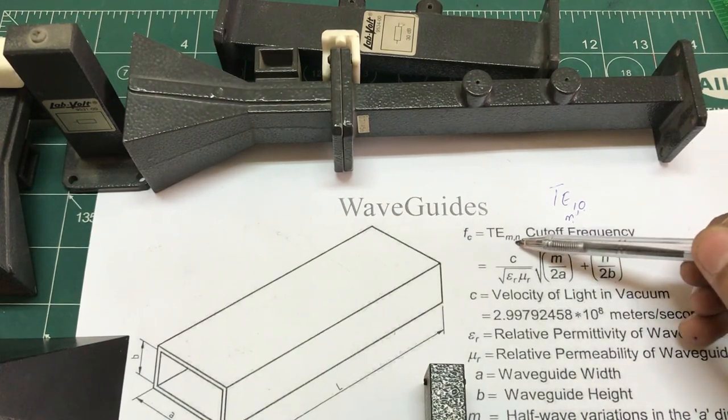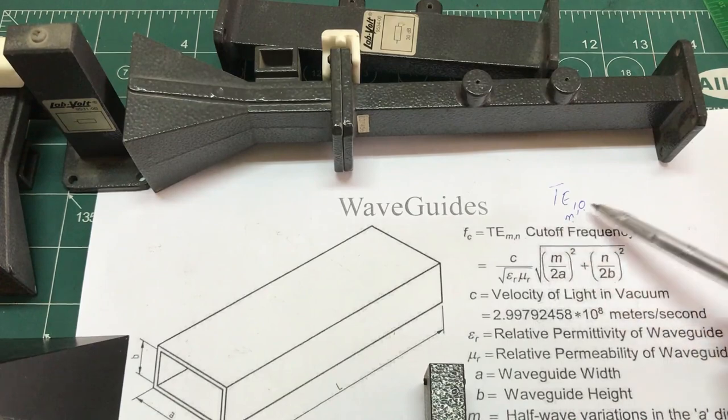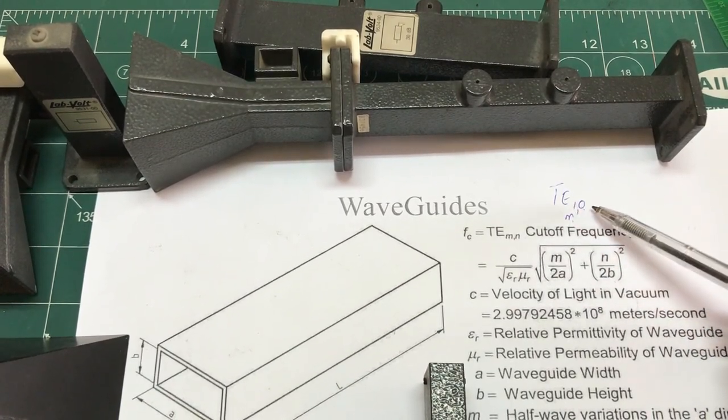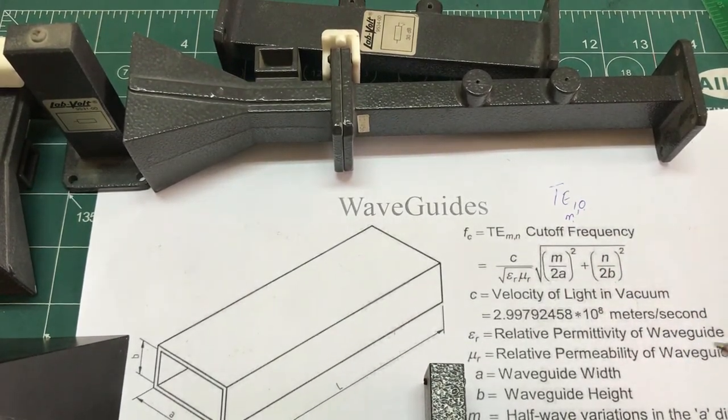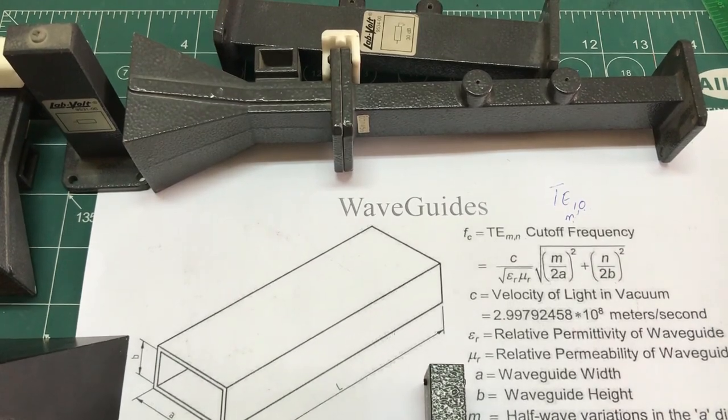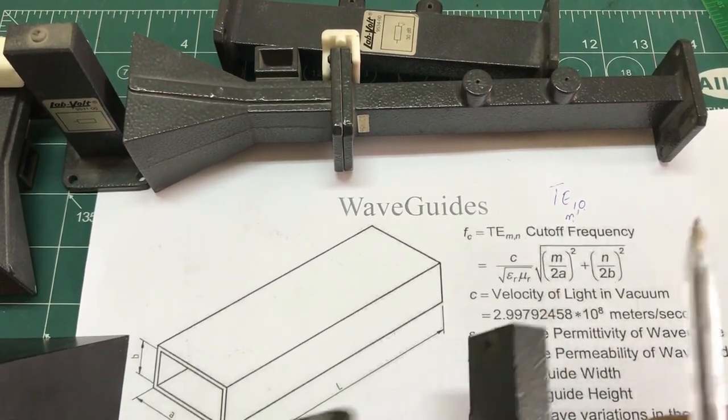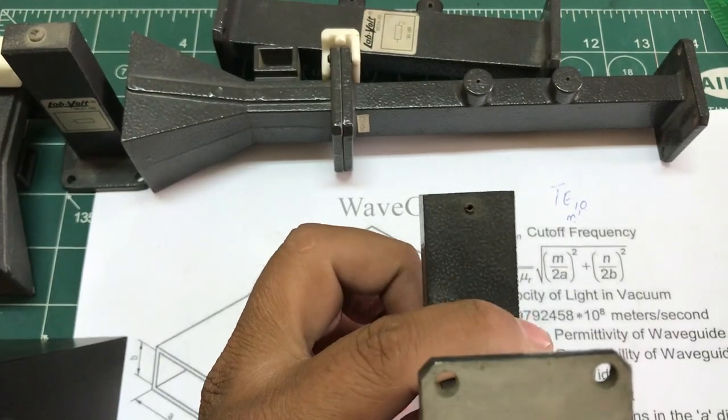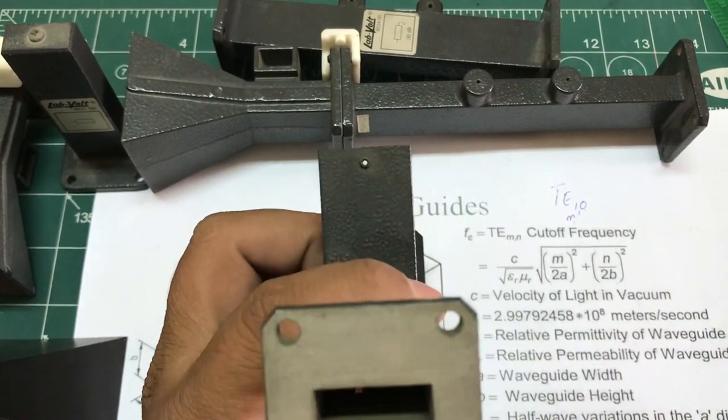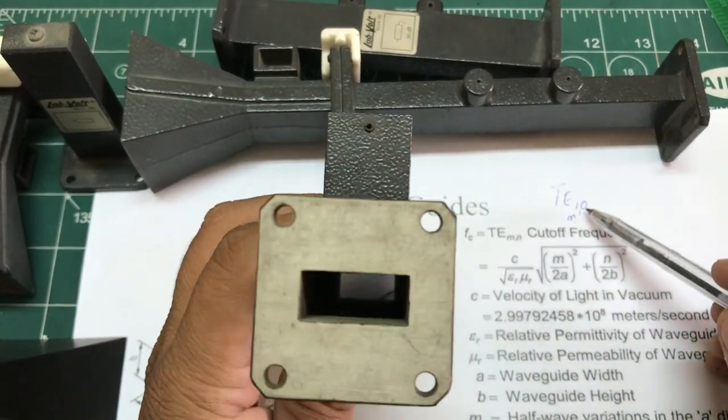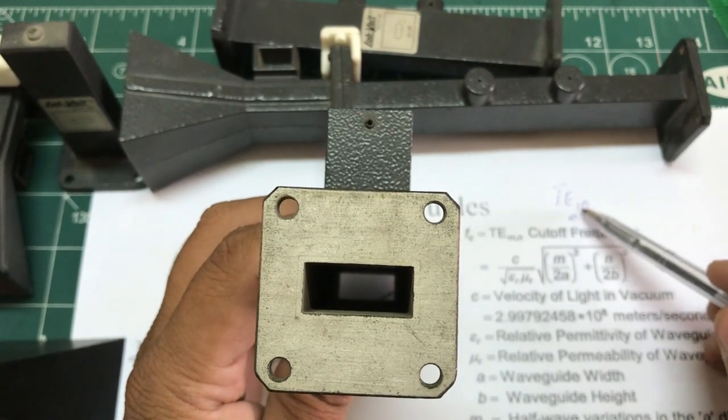These are the modes that it can support. So by having a mode of TE one zero, this is basically the basic mode for these transmission lines, for these waveguides that are rectangular in shape. Basically what that represents is this.